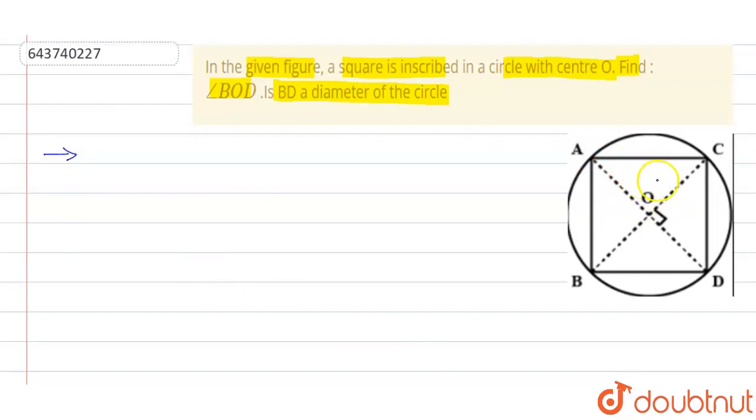Then we can get the diagonals of the square, which intersect each other at 90 degrees by the property of square. So we can say that angle COD is equal to 90 degrees.